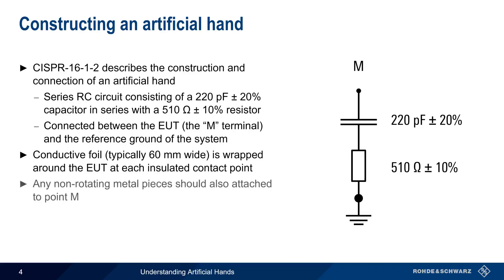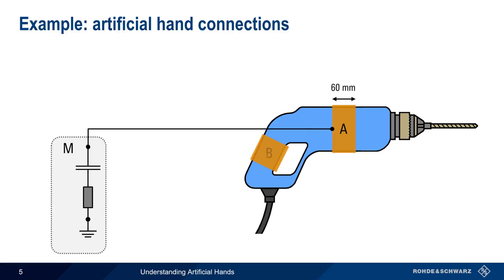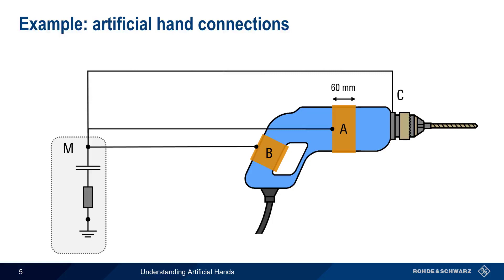If the EUT contains any non-rotating metallic pieces, these are directly connected to point M as well. Let's look at this graphically using a handheld drill as an example. Strips of conductive foil approximately 60mm wide are wrapped around the two locations where the drill would normally be held, and these are both connected to point M of our artificial hand circuit. In addition, any non-rotating metalwork, such as point C, should also be directly connected to point M on the artificial hand.